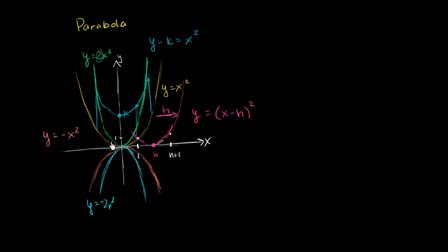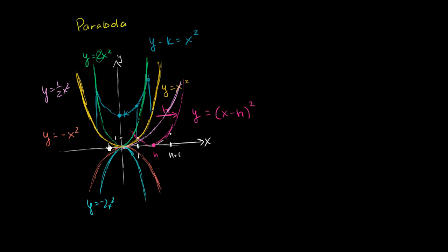Similarly, starting with y equals x squared, if we did y equals one-half x squared, the thing increases slower — it's going to open up wider. So a coefficient less than 1 but greater than 0 gives us a wider parabola. Hopefully this gives you a sense of how we can shift and scale parabolas.